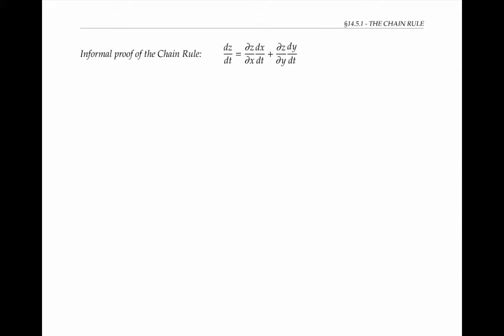We can give an informal justification of the chain rule using the idea of a differential. Recall that the actual change in height of our function, delta z, is approximately equal to the change in height of the tangent plane, or the differential dz. In fact, if our function is differentiable, which we're assuming it is, then we can write delta z as equal to dz plus some epsilon, where epsilon over the square root of delta x squared plus delta y squared goes to zero as delta x, delta y goes to zero.